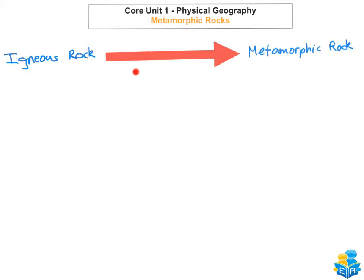Now we're going to look at some igneous rocks that have changed to metamorphic rocks. A common example is granite, which is an igneous rock. Granite changed to gneiss — you can find gneiss in County Wicklow. Granite changed to gneiss as a metamorphic rock because of regional metamorphism, so because of pressure and temperature deep within the ground.